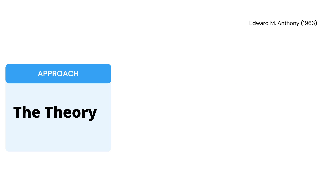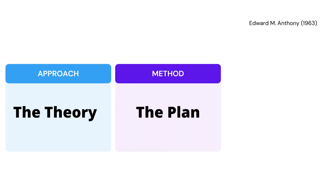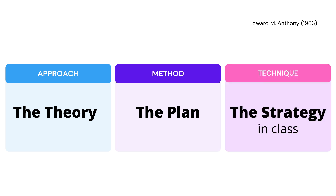To wrap up what we have seen: an approach is the theory, a method is the plan, and a technique is the strategy the teacher uses in the classroom. Later on, we will deal with each approach and method in detail. We will also see the difference between approach, design, and procedure according to Richards and Rogers.